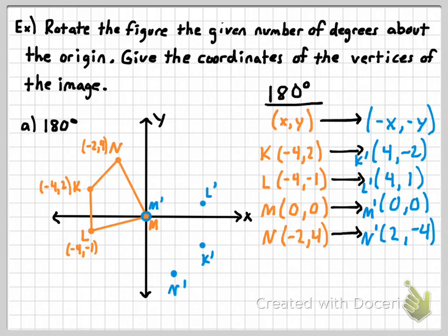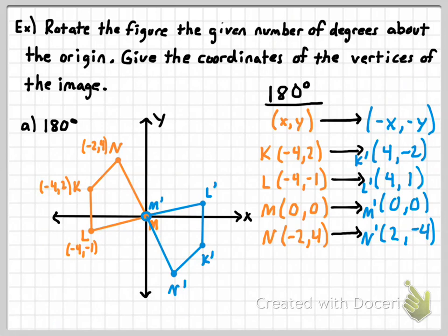Now let's go ahead and graph those points — there they are. One special thing to notice: one of the points of the figure was the center of rotation. Whenever the center of rotation is being rotated, it doesn't go anywhere — so M prime and M are exactly the same point. Let's connect the sides to make our rotated figure. There's our 180-degree rotation. If you know the pattern, it's very simple to apply. To verify correctness: if you connect both point N and N prime to the center of rotation, you can see a 180-degree angle there, confirming the correct rotation amount.